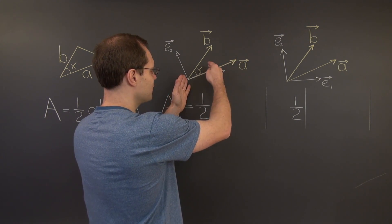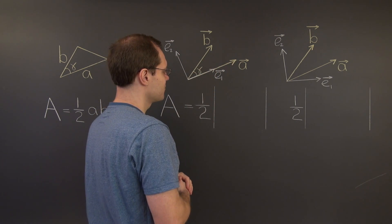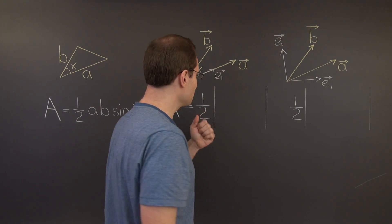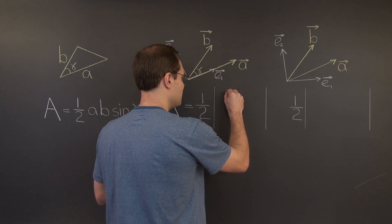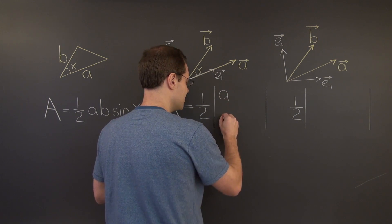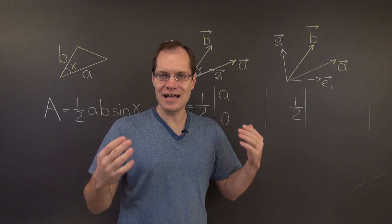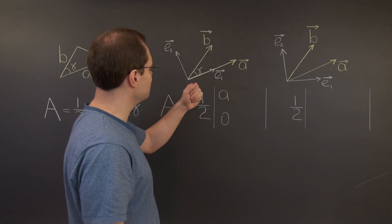Because A of the first basis vector gives us the vector A itself. So the components are the length of A, A without the arrow, A, 0. That's the first column.